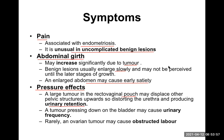If it is a case of renal failure and you catheterize, nothing would be there — which is not appropriate. A tumor pressing down on the bladder may cause urinary frequency, meaning the patient wants to go to the toilet more often due to irritation. Rarely, an ovarian tumor may cause obstructed labor as well, when the large mass prevents the baby from descending.